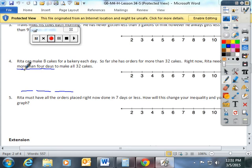Rita needs more than four days to make the cakes. So, I'm going to use D to represent her days, and she needs more than four days to make her cakes. So, the days has to be greater than the number four. When you go to put that on the number line, we have to mark four as a very important number.